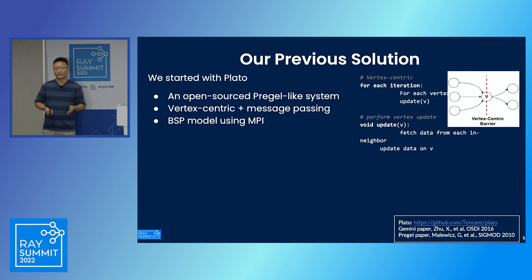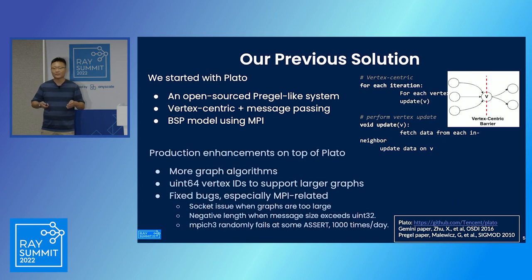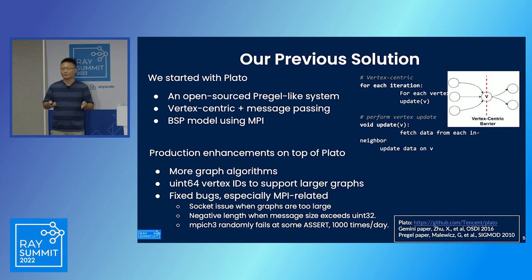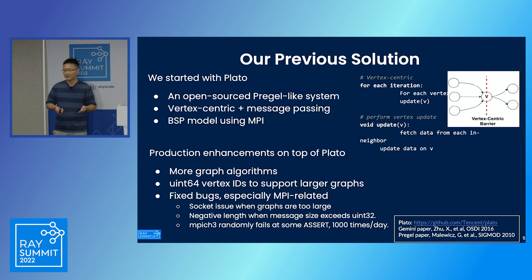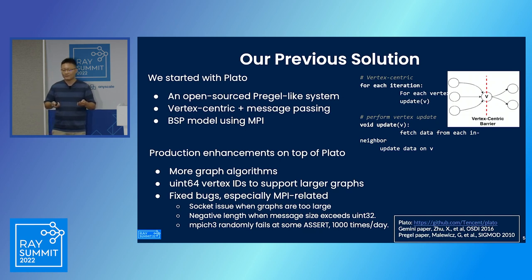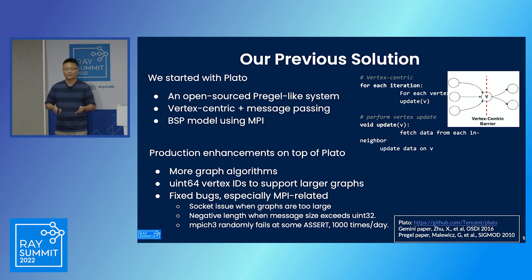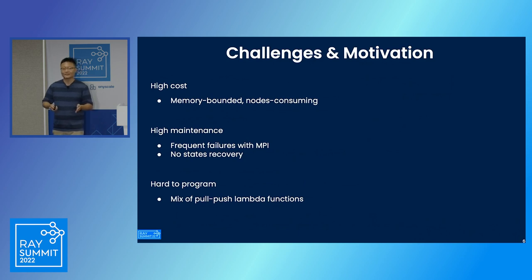In our effort to meet production requirements, we did a lot of enhancements — implementing more graph algorithms, extending the data ranges, and fixing a bunch of bugs, especially MPI-related ones. When the graph becomes really large, socket issues become apparent, negative length issues come up, and MPI randomly fails due to system-level assertions. This happens quite frequently, like a thousand times a day.